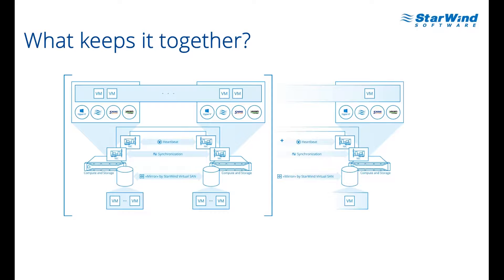Starwind VirtualSAN also allows you to scale further seamlessly by adding a third server, fourth server, and scaling out to up to 64 servers — the current Hyper-V failover cluster limitation. As soon as Windows Server 2016 comes out and that limitation is raised, Starwind is ready to raise its limits too. 5nine keeps everything smooth by allowing you to manage the entire cluster from one place with many additional capabilities. Veeam does an excellent job keeping everything backed up so if something bad happens, you always have a restore point.